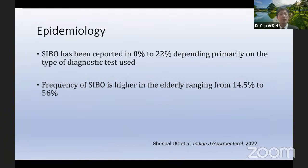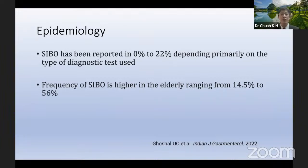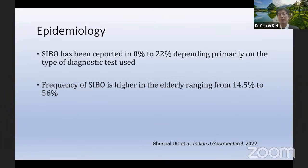In terms of epidemiology, SIBO has been reported in up to 0% to 22% of patients, depending primarily on the type of diagnostic test used. Those with predisposing conditions have a higher prevalence. The frequency of SIBO is higher in the elderly, ranging from 14.5% to 56%.